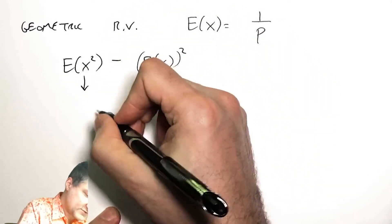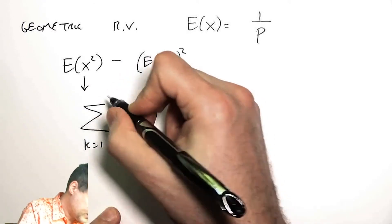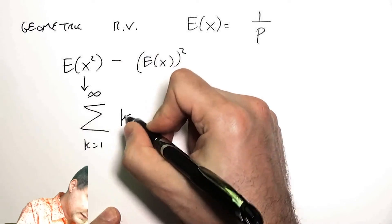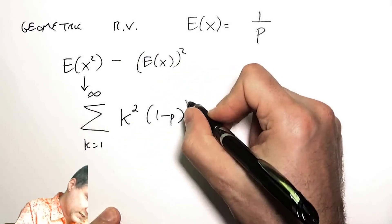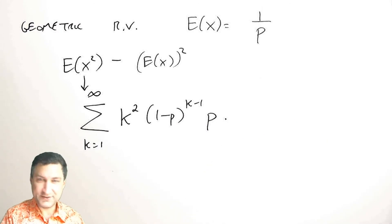The expected value of X squared minus the expected value of X squared. We have to compute this. What is this? This is going to be the sum from k equals 1 to infinity of k squared times the PMF.